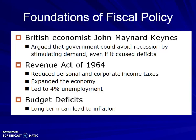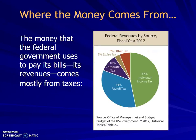When looking at fiscal policy in the United States, the Revenue Act of 1964 reduced personal and corporate income taxes, expanded the economy, and led to 4% unemployment. There was the idea that budget deficits in the long term can lead to inflation. When we look at where the federal money comes from to pay our bills, mostly it's going to come from taxes: individual income taxes, payroll taxes, corporate taxes, excise taxes, and other taxes.